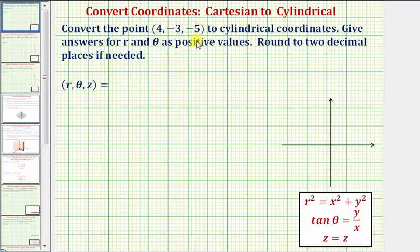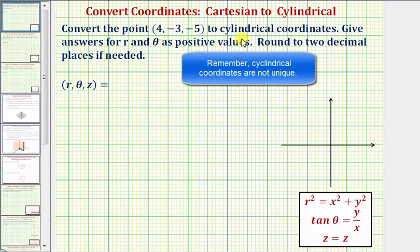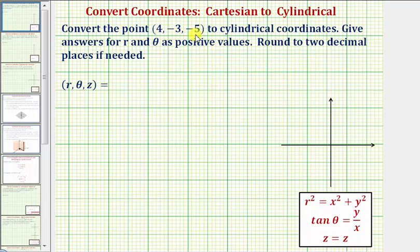We're given a point in Cartesian coordinates and asked to find possible cylindrical coordinates. The given point has coordinates four, negative three, negative five. So we know x equals four, y equals negative three, and z equals negative five.